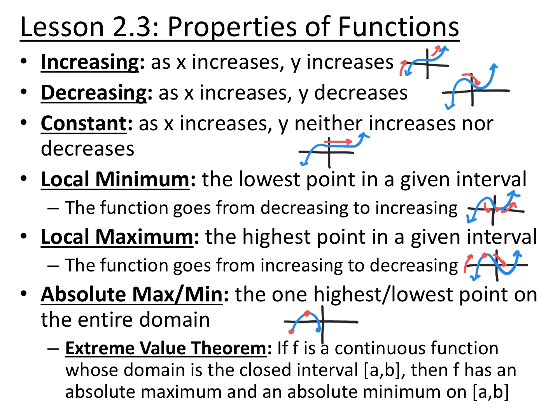A local maximum is the highest point in a certain interval — it's where your graph goes from increasing to decreasing. It has to make that little turnaround, like the top of an upside-down parabola, and you could have zero, one, two, or an infinite number of them. You'll also hear the word 'relative' in place of 'local' — those are synonyms.